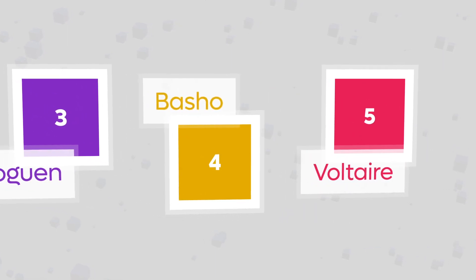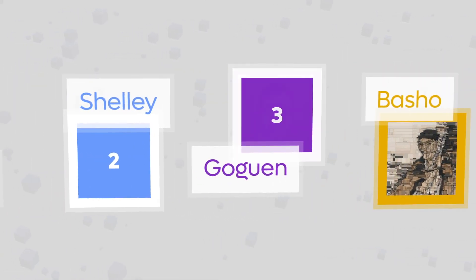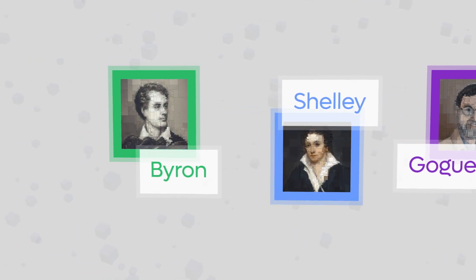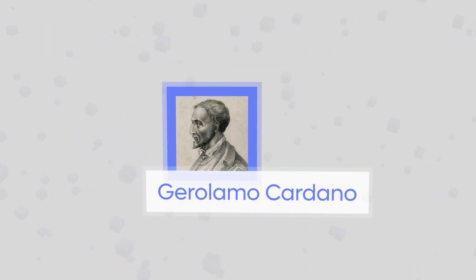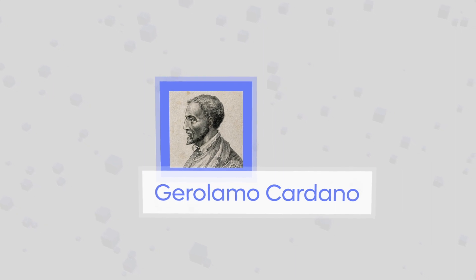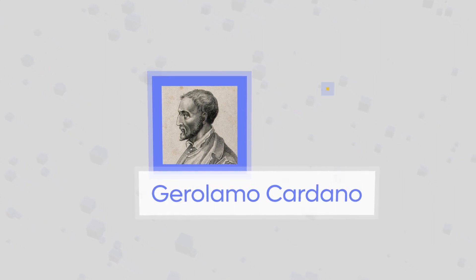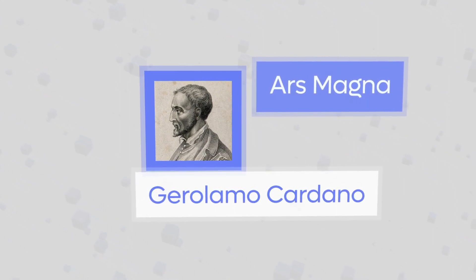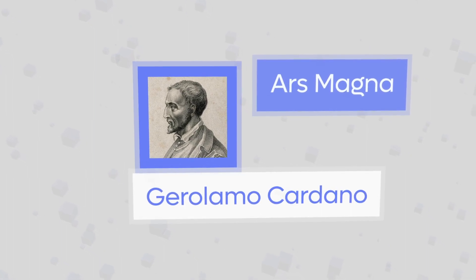Each milestone is named after prominent figures in history. The name Cardano, in fact, came from Gerolamo Cardano, who was one of the most influential mathematicians of the Renaissance, even known for his Ars Magna — one of the cornerstones in the history of Algebra.